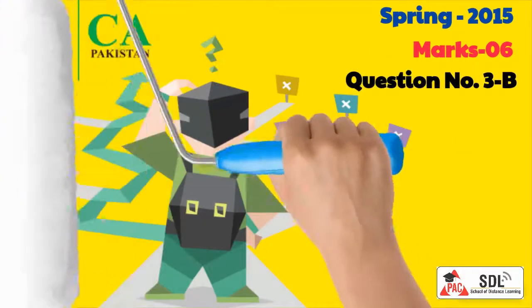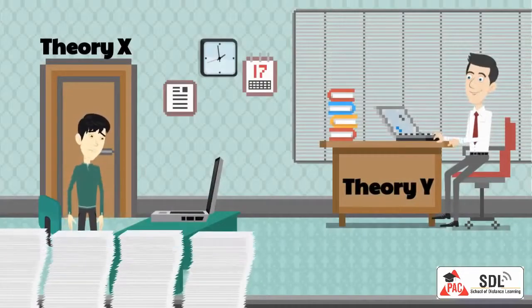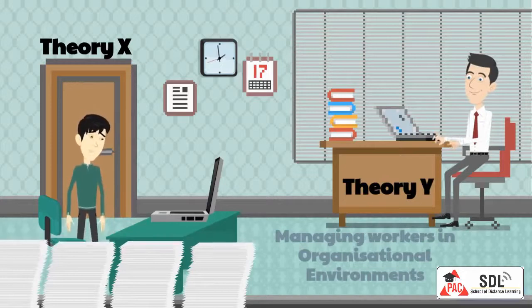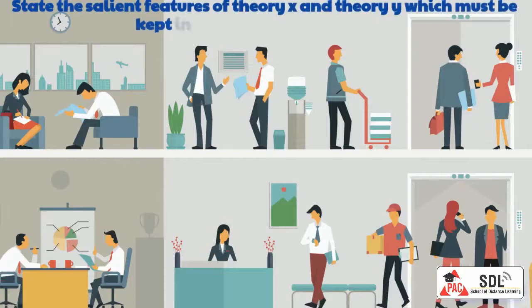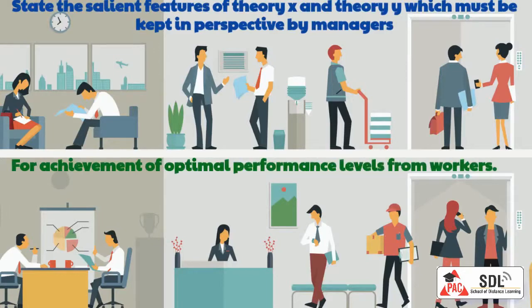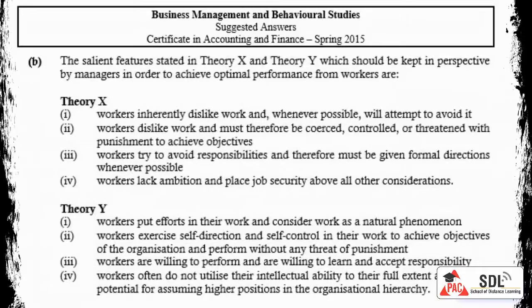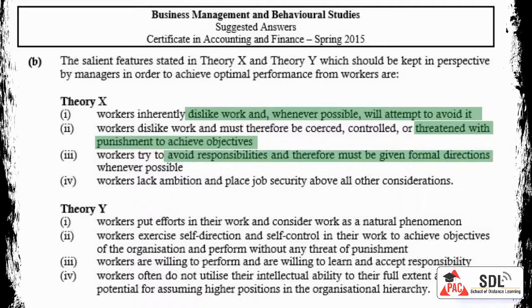Testing in ICAP exams — Spring 2015, 6 marks, Question 3b: Douglas McGregor has presented two different approaches, Theory X and Theory Y, about managing workers in organizational environments. State the salient features of Theory X and Theory Y which must be kept in perspective by managers for achievement of optimal performance levels from workers. In Theory X: workers dislike work and avoid it; workers are threatened with punishment to achieve organizational objectives; workers prefer to be directed; and workers lack ambition and want security more than anything else.